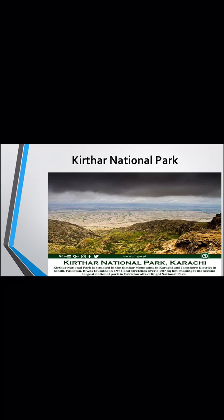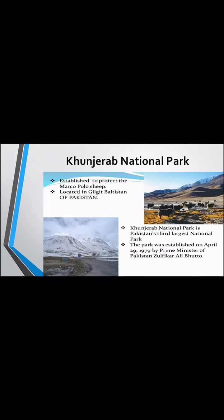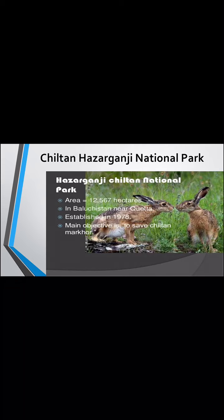Kirthar National Park is located in Karachi and Jamshoro, in the district of Sindh. It was founded in 1974 and is the second largest national park in Pakistan. Hunza Nagar National Park is located in Gilgit-Baltistan and is the third largest national park in Pakistan. It was established to protect the Marco Polo sheep. Chiltan Hazar Ganji National Park covers an area of 12,567 hectares, is located near Quetta in Balochistan, and was established in 1978 to save the Chiltan markhor.